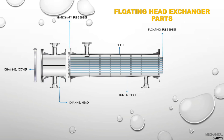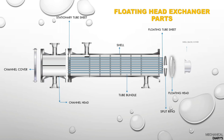Next is the channel head and channel cover. Floating head exchanger tube bundles always have two tube sheets: the front side is a stationary tube sheet and the back side is a floating tube sheet. Then there is a split ring, the floating head, and the exchanger back cover — called the shell back cover.